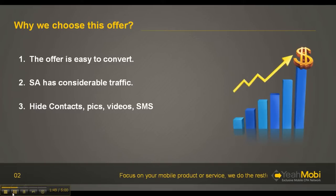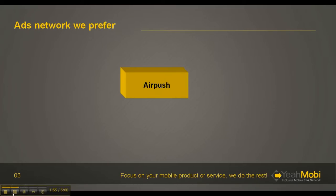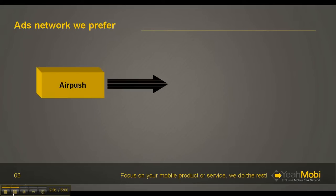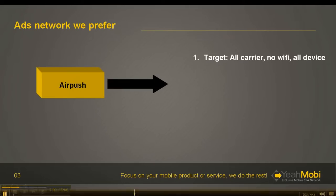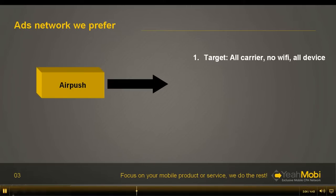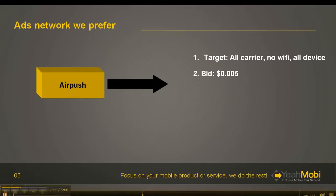Then we begin our testing. But first, we should choose our network. This time we choose App Push. We target all carriers, no Wi-Fi, all devices, and we bid $0.005 USD.